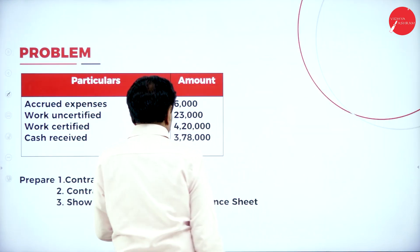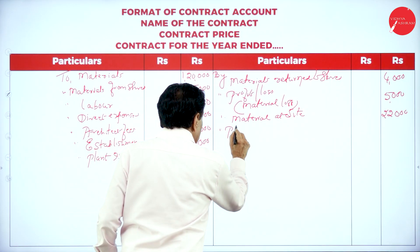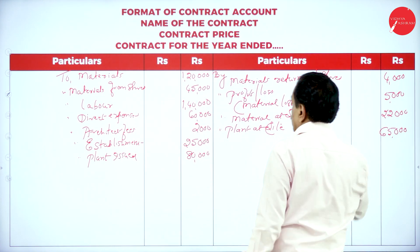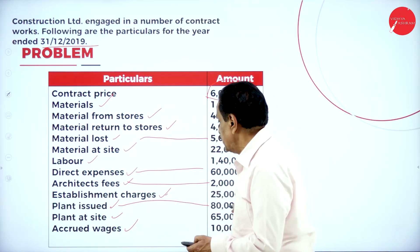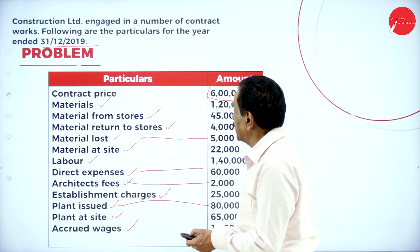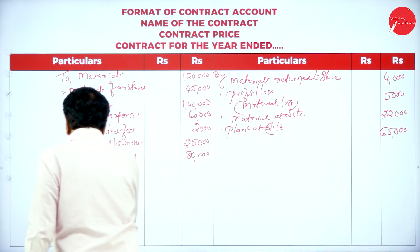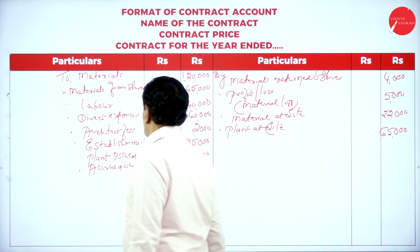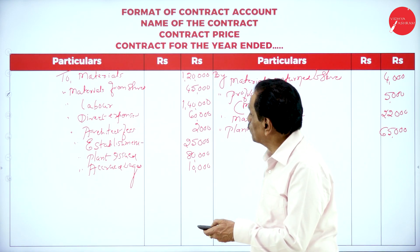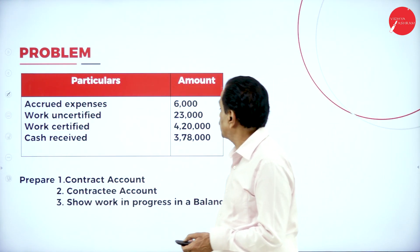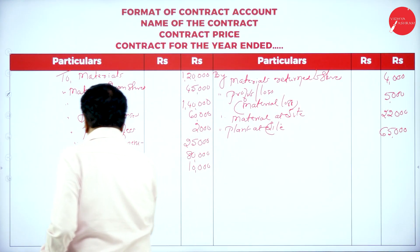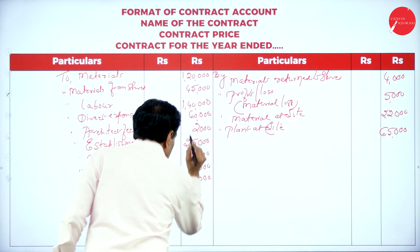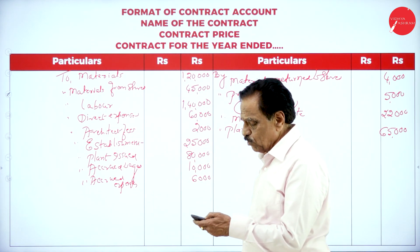Plant on site: 65,000 (credit side). Accrued wages: 10,000. Accrued expenses: 6,000.